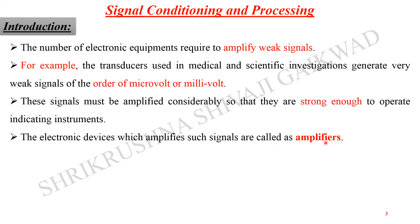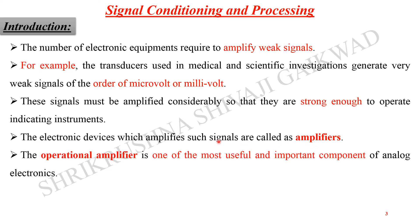The electronic devices that amplify signals are called amplifiers. The electronic device which amplifies signals generated by transducers is called an amplifier. One very important amplifier is the operational amplifier, because it performs some very important operations such as mathematical and electronic operations — including addition, subtraction, integration, and differentiation. That is why we call it an operational amplifier: it performs operations as well as amplifies the signal.